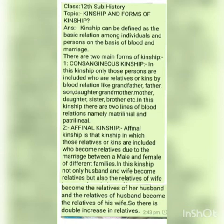There are two main types of kinship. Number one is consanguineous kinship. Consanguineous kinship is that kinship in which only those individuals and persons are included who are kins or relatives by blood relations only — like grandfather, father, son, daughter, or grandmother, mother, daughter, or brother, sister. All these are related to one another by their blood relations.